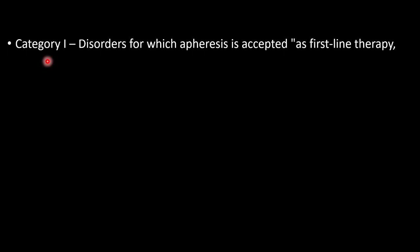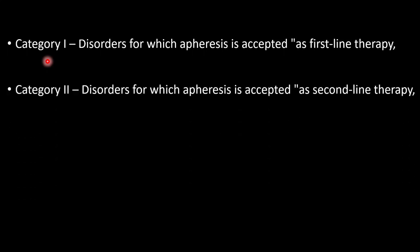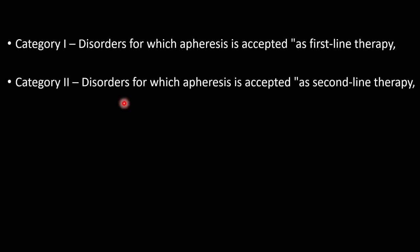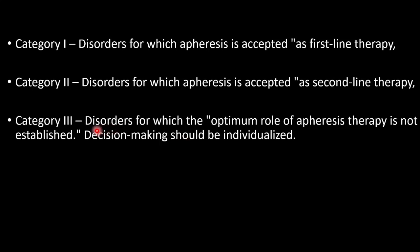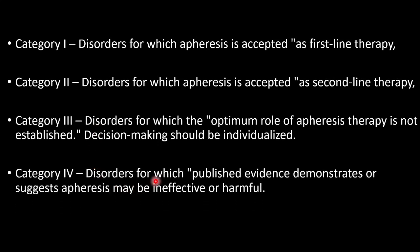In this video we will see the indications of plasmapheresis as per the category of recommendation. Category 1 recommendations are those diseases where plasmapheresis is advised as first-line therapy. Category 2 are disorders in which plasmapheresis can be used as adjuvant to primary therapy but has shown benefit. Category 3 is a group of diseases where plasmapheresis has not shown good benefit but the individual clinician can weigh risk and benefit. Category 4 are diseases where plasmapheresis has been tried but shown little benefit or is mostly doing harm.